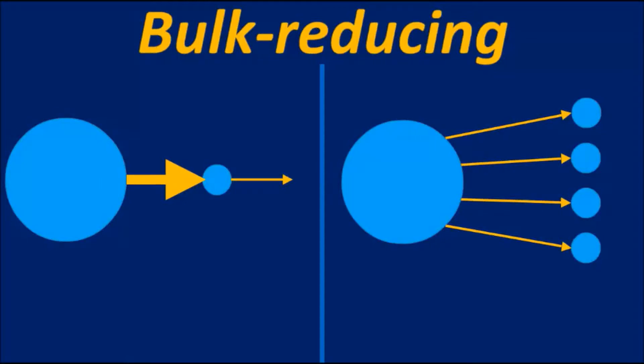Over here on the left, the model I have here, we have a big circle which represents the inputs used to create a smaller circle, the final product.